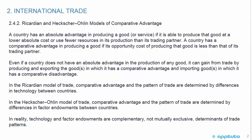In the Ricardian model of trade, comparative advantage and the pattern of trade are determined by differences in technology between countries. In the Heckscher-Ohlin model of trade, comparative advantage and the patterns of trade are determined by differences in factor endowments between countries.